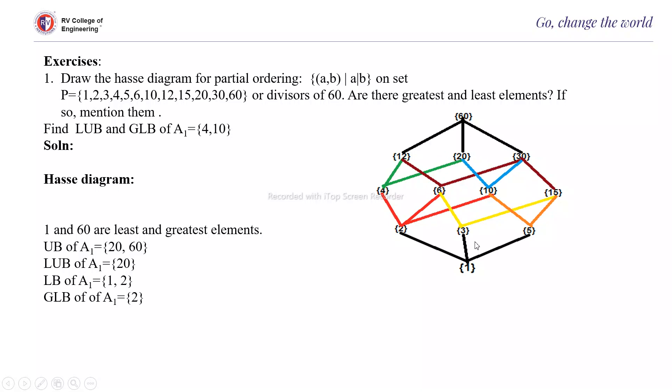Likewise, we are going to draw this Hasse diagram. Now, 1 and 60 are the least and greatest element because 1 is having relation with every other element and it is the starting point. Whereas 60 is related with all the elements, so 60 is the greatest element.